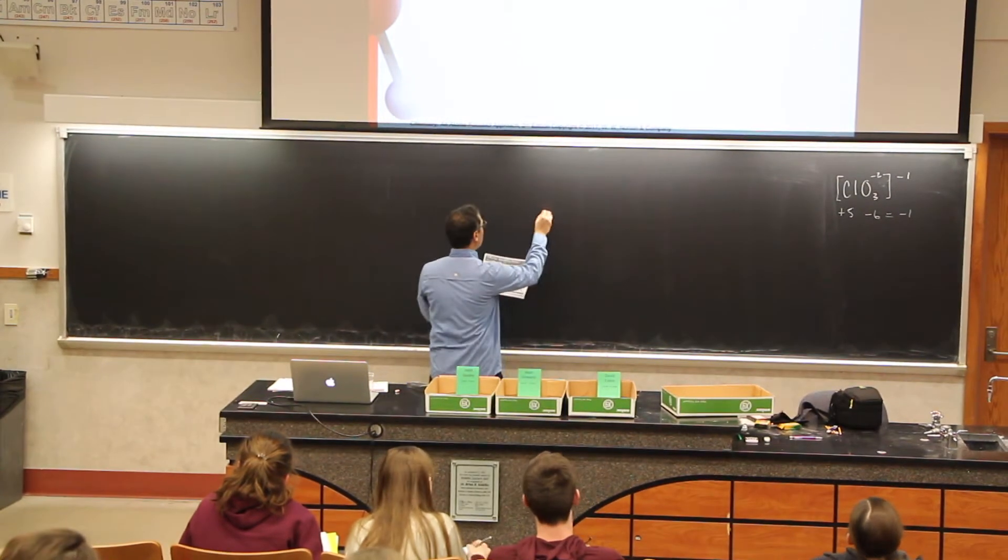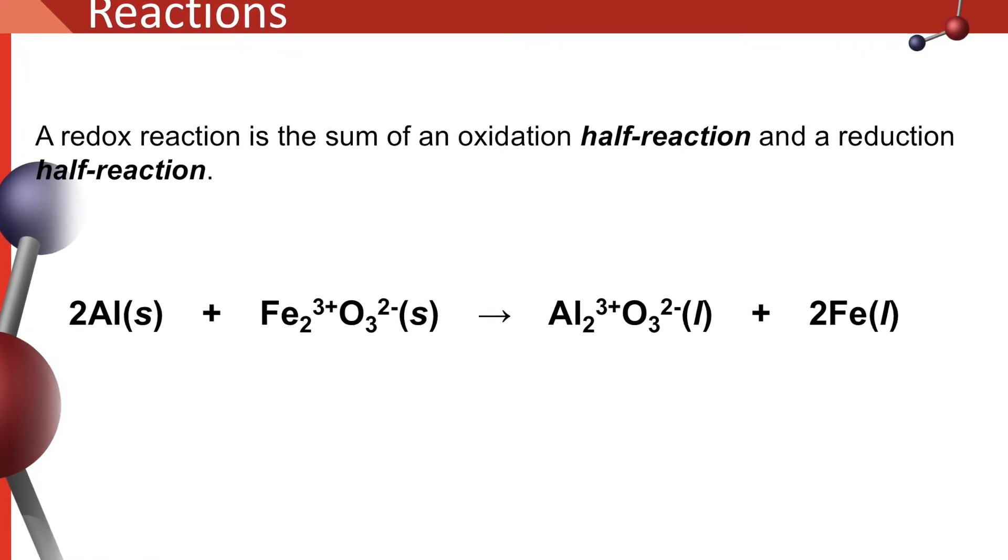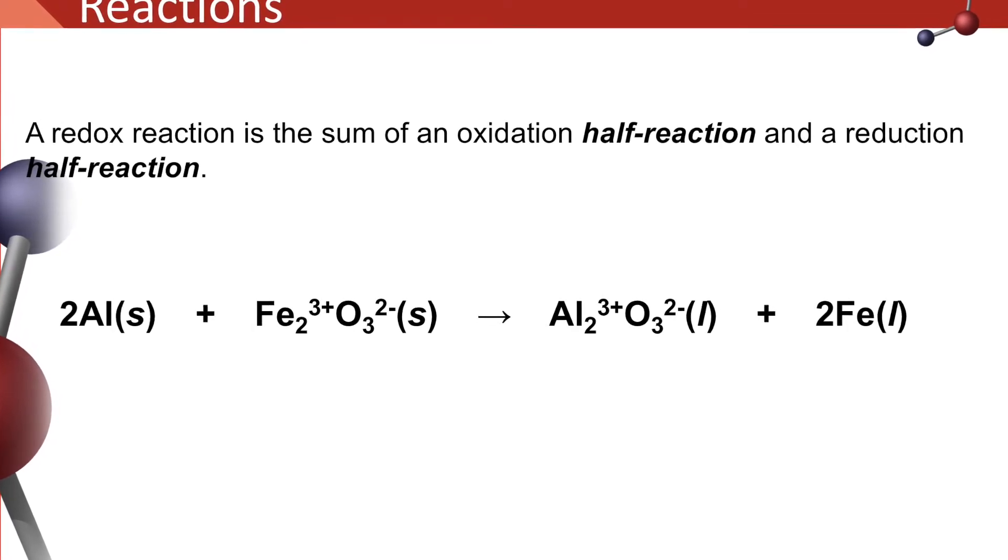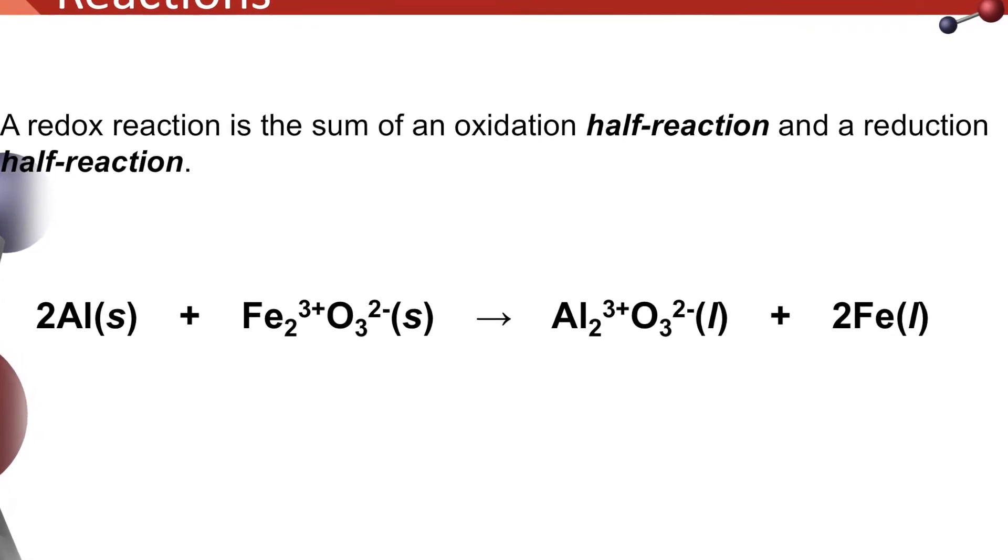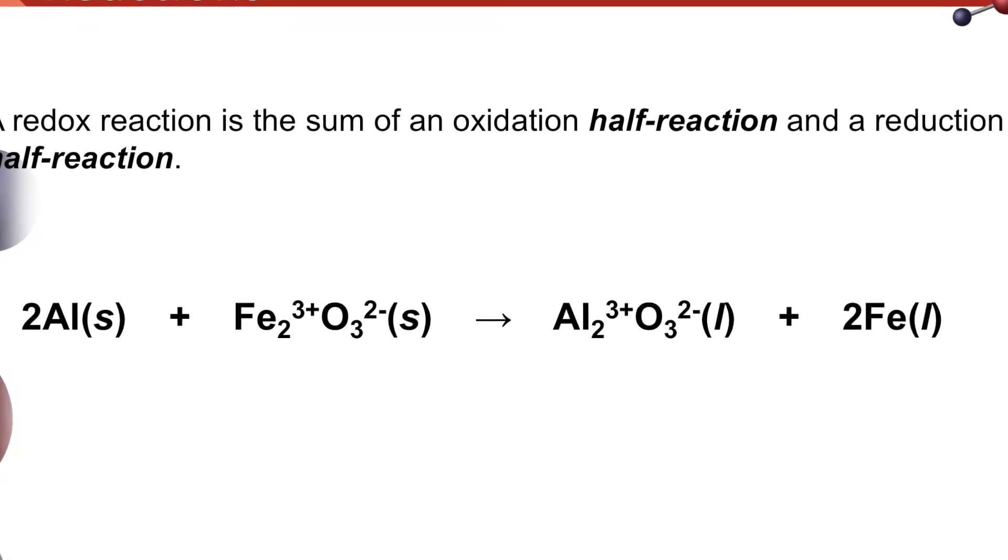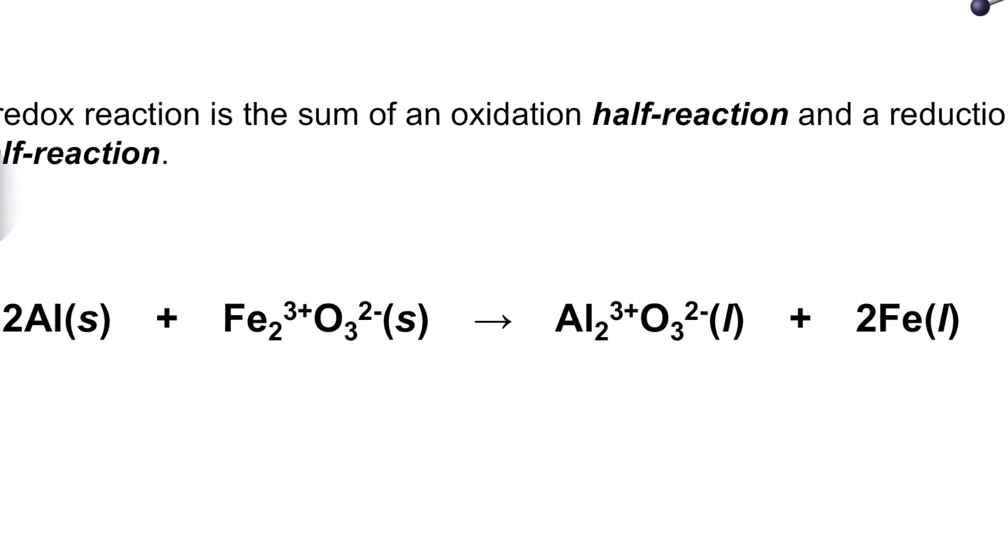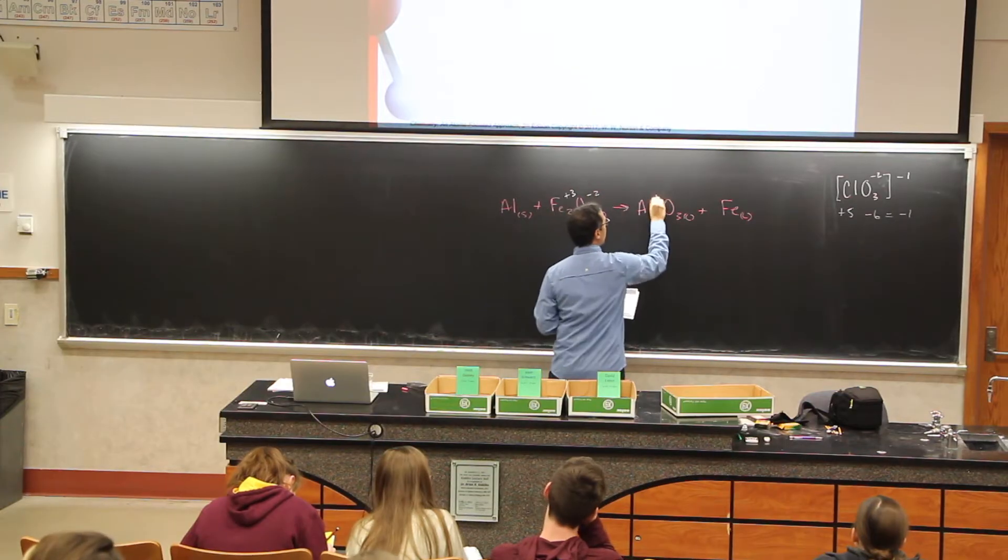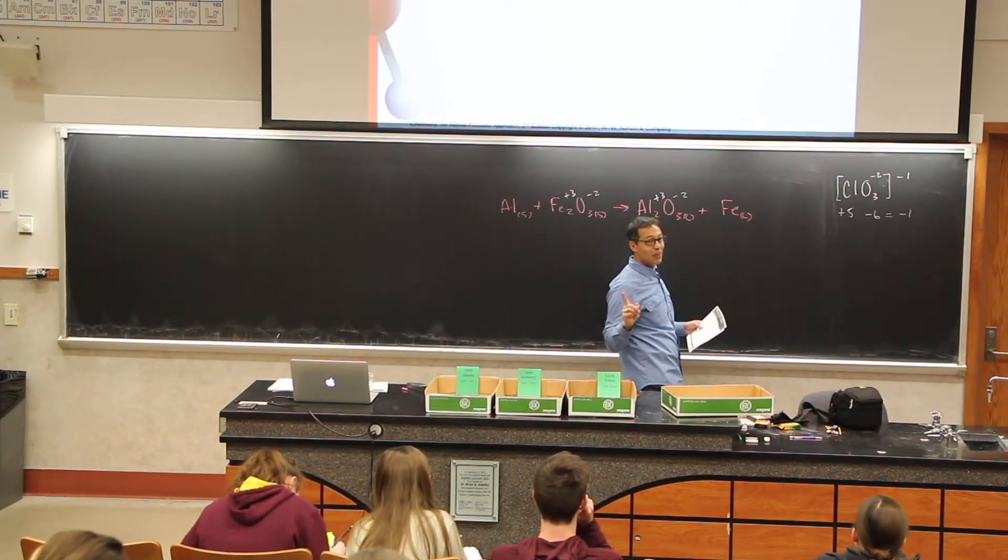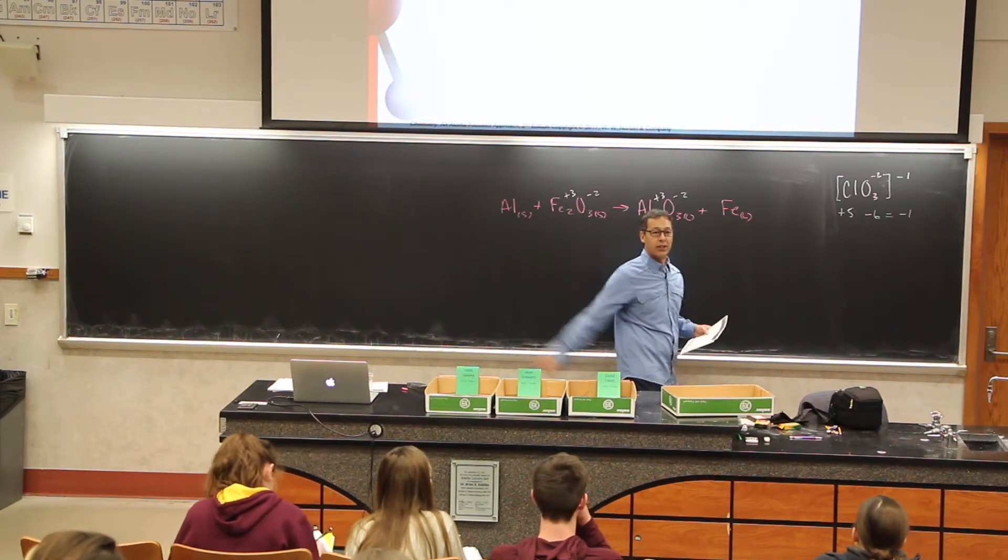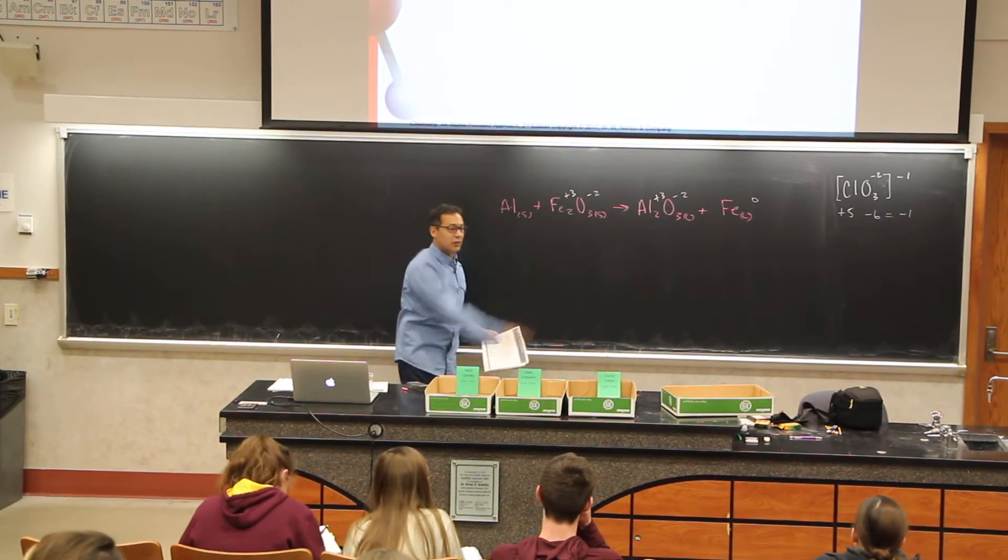Here is aluminum solid plus Fe2O3 solid gives us Al2O3 liquid plus Fe liquid. We throw in our oxidation numbers and on this here this is a plus 3 minus 2, plus 3 minus 2. Here's an element all by itself, its oxidation number is zero, and here's aluminum, its oxidation number is zero.